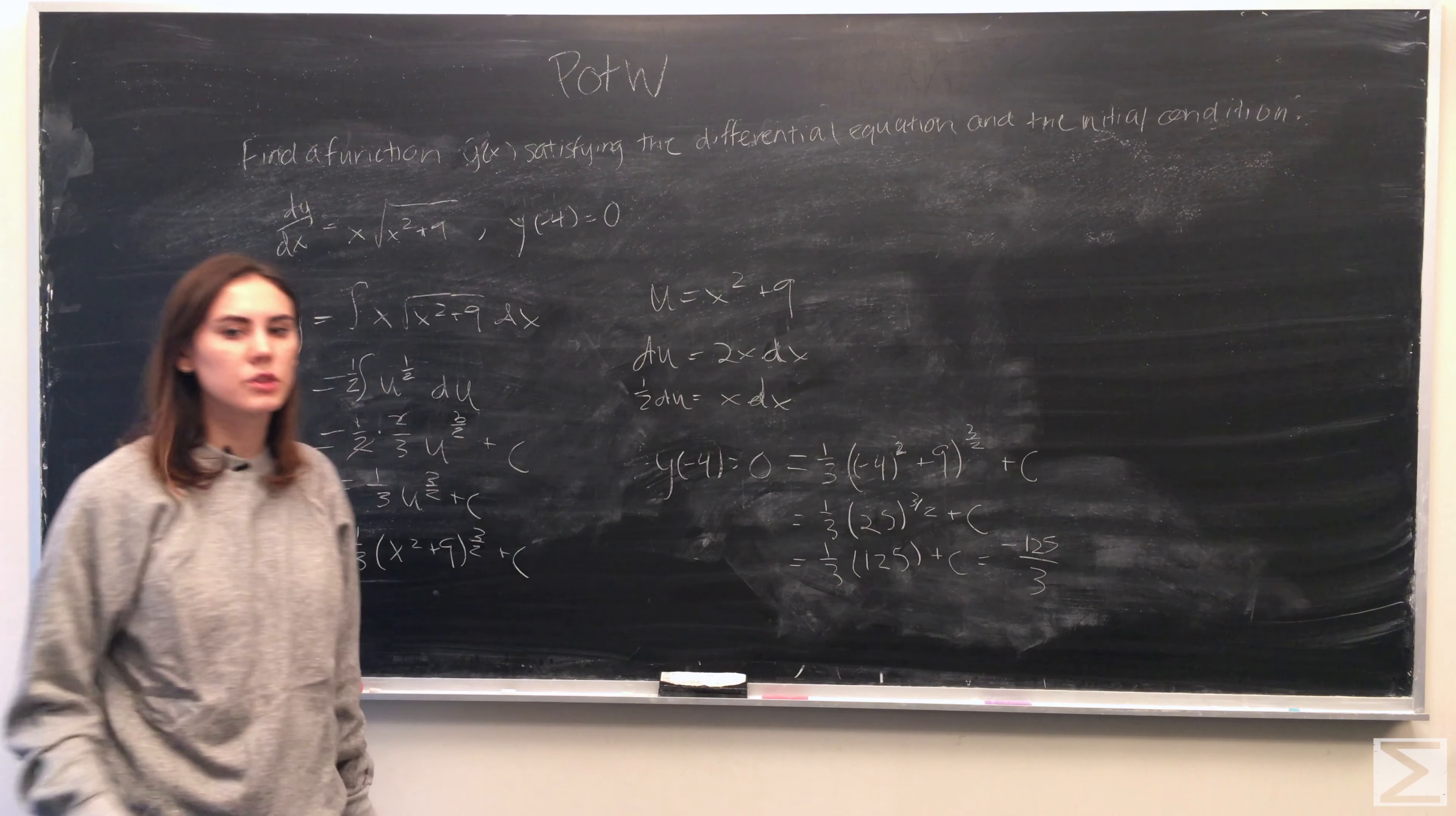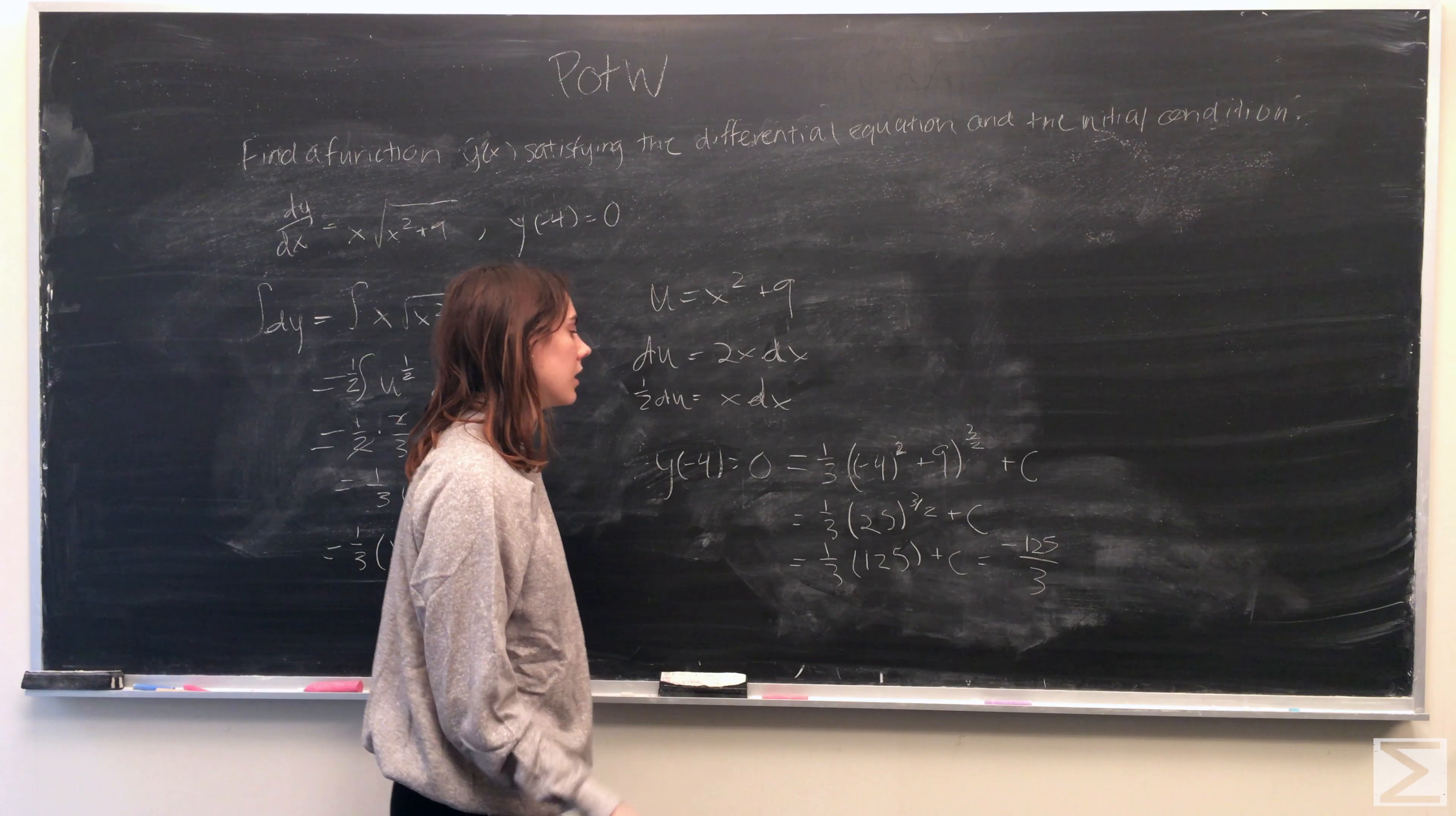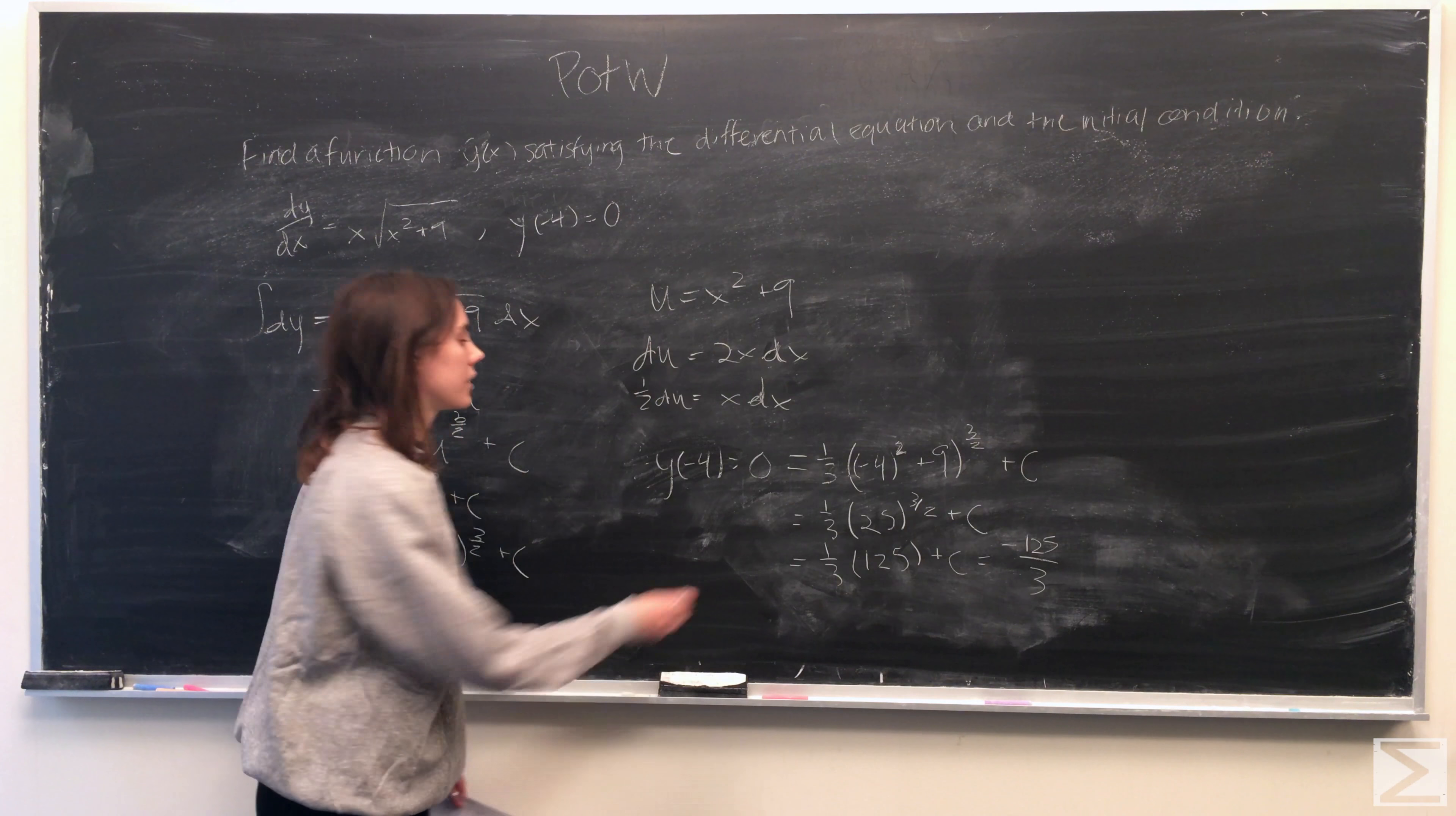So substituting in negative 4, what we get is 1 third times negative 4 squared plus 9 to the 3 over 2 plus c is equal to 0. Simplifying a little bit, we get 1 third times 25 to the 3 over 2 plus c is equal to 0.